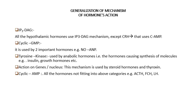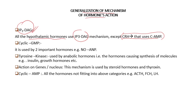The generalization of the mechanism of hormone action: number one is the IP3/DAG mechanism. All hypothalamic hormones will utilize this mechanism except CRH — corticotropin-releasing hormone — which will utilize cyclic AMP. So it doesn't matter which hormone it is: if it is coming from the hypothalamus, it uses the IP3/DAG mechanism, except CRH.